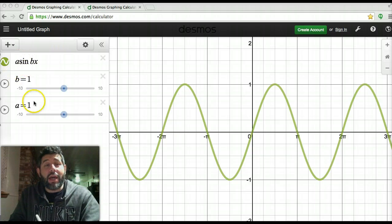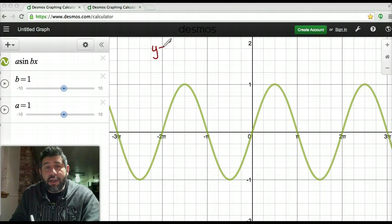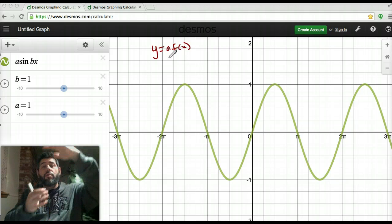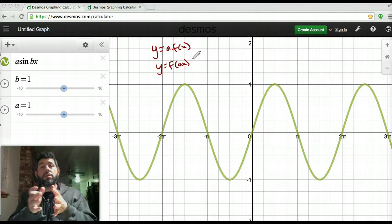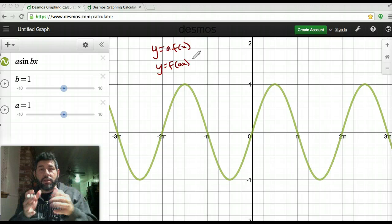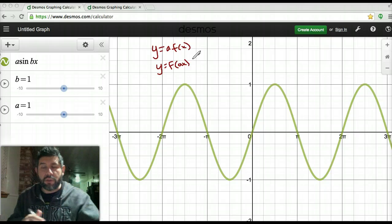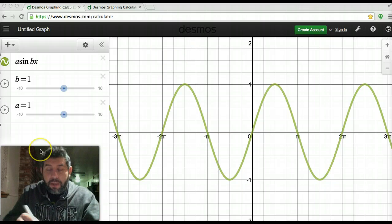But the rules for what a and b do to the graph are the same thing. Notice here that I have a set to 1 and b set to 1. If you remember when we went over functions a long time ago and translations of functions, y equals a f of x was a vertical stretch or shrink by a factor of a. And if we had a number inside the parentheses, a times x, this was a horizontal stretch or shrink by a factor of 1 over a.